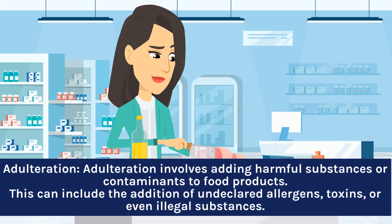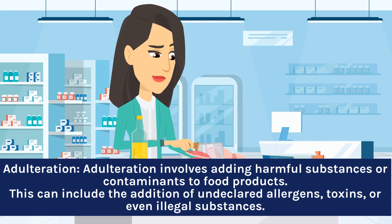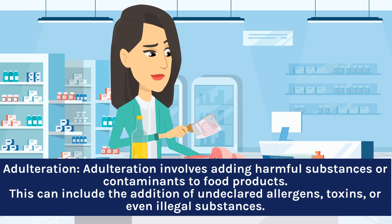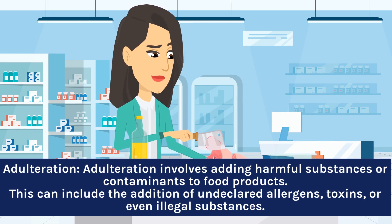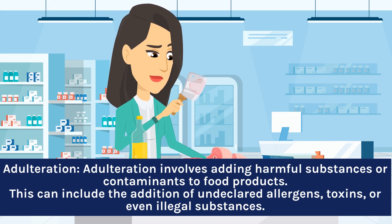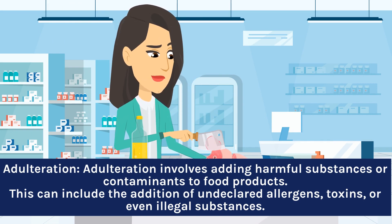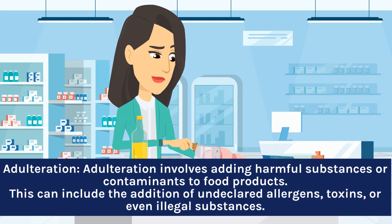Adulteration involves adding harmful substances or contaminants to food products. This can include the addition of undeclared allergens, toxins, or even illegal substances.